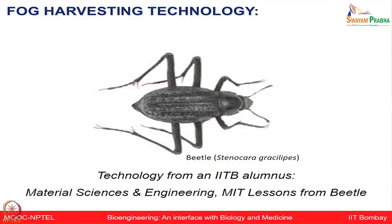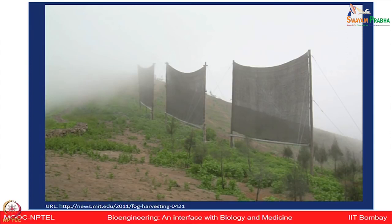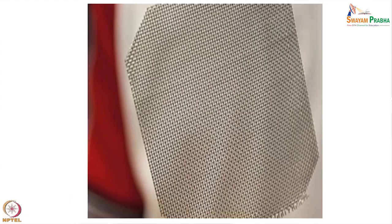Let us now talk about fog harvesting technology — lessons taken from the beetle Stenocara gracilipes. An IIT Bombay alumnus who studied at MIT took lessons from this beetle and developed meshes that mimic its behavior. The Namib Desert Beetle collects water droplets during morning fog, rolling moisture down into its mouth to conserve water in the desert. They developed a device consisting of fence-like meshes to attract droplets and drip them into a container, enabling villagers without drinking water to collect water during morning hours.